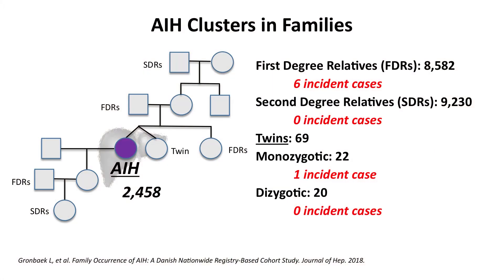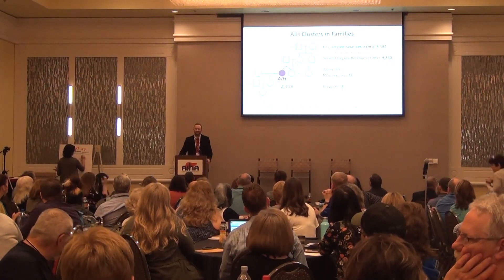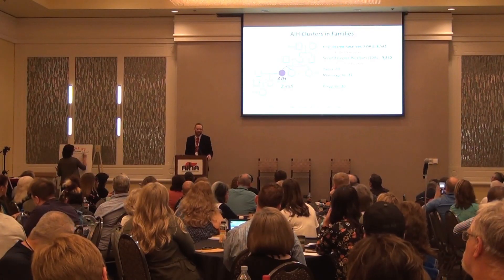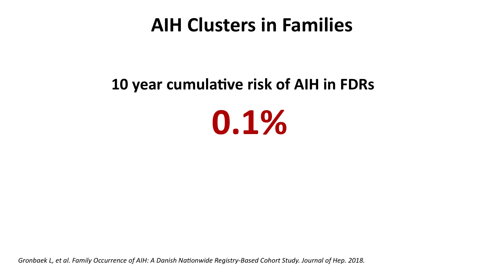How many AIH patients did they see in first-degree relatives out of 8,000 over 10 years? Six. How many second-degree relatives — aunts, uncles, cousins? Zero. Twins are even interesting because the monozygotic twins share DNA, which really speaks to the idea of environment — if you have the same genes, maybe it's more than that. How many of the monozygotic twins saw their sibling have AIH? One. And in dizygotic, zero. So it really speaks to the idea that there's much more than genetics. The overall risk of developing AIH in a first-degree relative over 10 years was 0.1%, which means about one in 1,000 chance. I think that's important for your kids and loved ones. This is a little different than what we see in other autoimmune liver diseases.